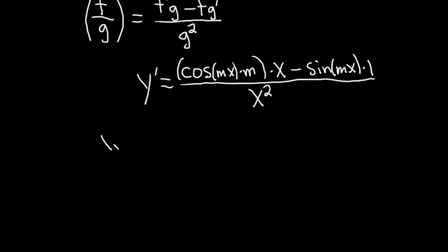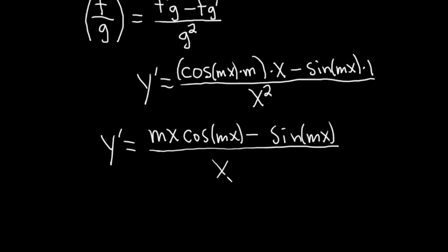Okay, let's keep going. So this is y prime equals. I guess we can put the mx here in the front. That might make it look better. So this is mx cosine mx minus, and then sine mx times 1 is just sine mx. And that's all being divided by x squared.